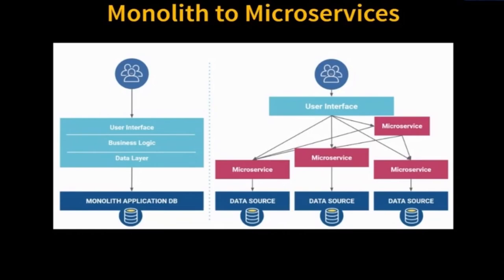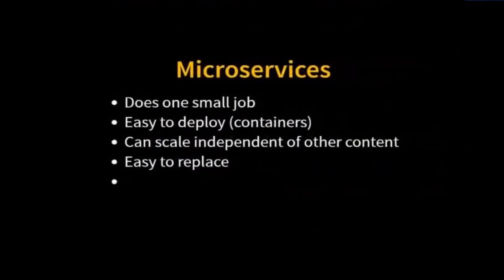One of the core tenants of a microservice is that it owns its own data. Here's the data store associated with that microservice. Here's another data store associated with that microservice. Each microservice owns its own data. It does one small job. It's easy to deploy. We can scale independent of other content. It's easy to replace. And in particular, it owns its own data.